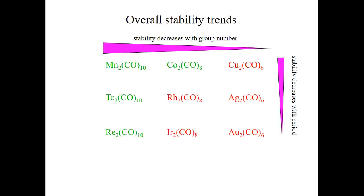The stability trends for these dimeric carbonyls are the same as previously observed. Going from left to right in the periodic table, stability decreases because the coordination geometry goes from octahedral to trigonal bipyramidal to tetrahedral, providing less efficient orbital overlap for π-backbonding. Stability also decreases going down a group, explained by less efficient orbital overlap as the heavier metal has larger orbitals that overlap poorly with the relatively small carbonyl ligand orbitals.